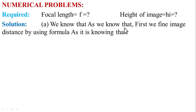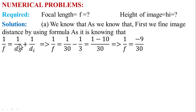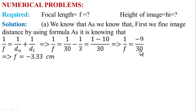For the solution, using the mirror formula: 1/F = 1/D₀ + 1/Dᵢ. So 1/F = 1/30 + 1/(−3) = 1/30 − 1/3. Taking LCM of 30 and 3, which is 30: numerator is 1 − 10 = −9. So 1/F = −9/30. Taking reciprocal: F = 30/(−9) = −3.33 cm.